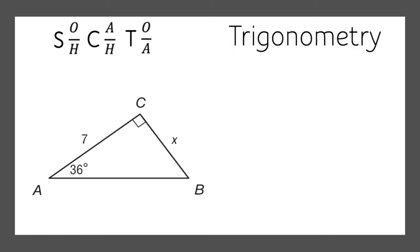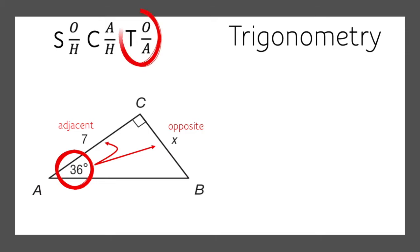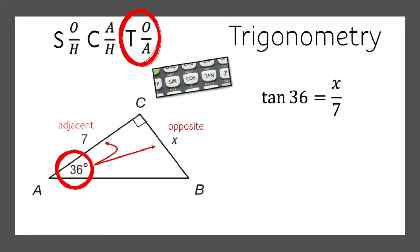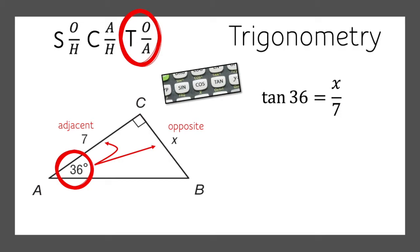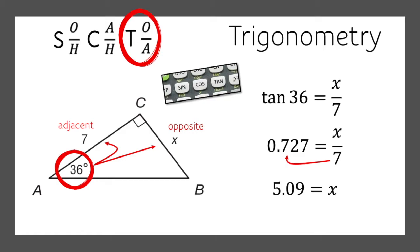In this triangle, we know 36 degrees and we know one leg is 7, but we're missing the other leg. We don't know the opposite, but we do know the adjacent — so opposite and adjacent means tangent. We know that the tangent of 36 is x divided by 7. On your scientific calculator, you'll see sine, cosine, and tangent buttons. If you put in tangent of 36, you'll get 0.727. So 0.727 equals x divided by 7. Multiply both sides by 7, and we know that missing side is 5.09.